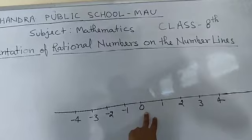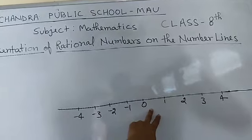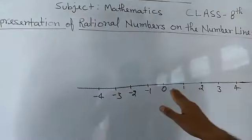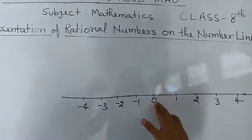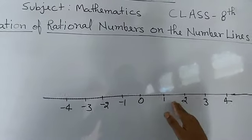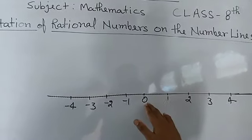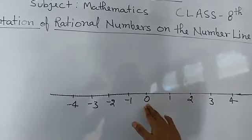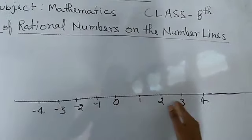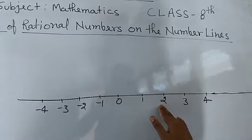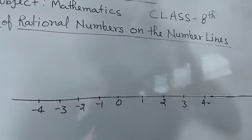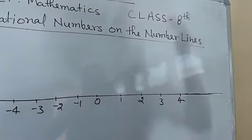On the number line you can represent each and every number. If you go to the right of 0, the numbers become greater: 1 is greater than 0, 2 is greater than 1, 3 is greater than 2. So on the right side you get the numbers in ascending order.